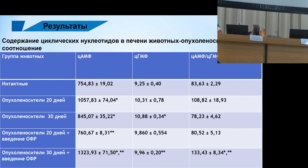Cyclic AMP increases significantly at 20 and 30 days after ozone treatment. The same applies to cyclic GMP, whose levels also go up. This is very important: in tumor-carrying animals, the cGMP-to-cAMP ratio goes from 83 to 133, meaning the inclination towards cell proliferation in the liver decreases sharply — which would indicate no metastases penetrating the liver. Since the liver supplies these products to the whole body, the tendency toward proliferation throughout the body decreases.